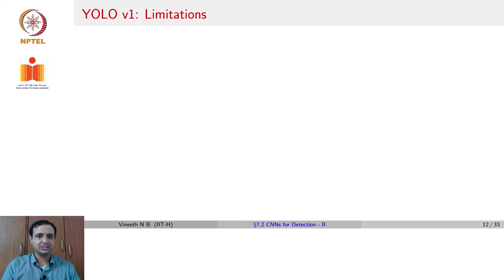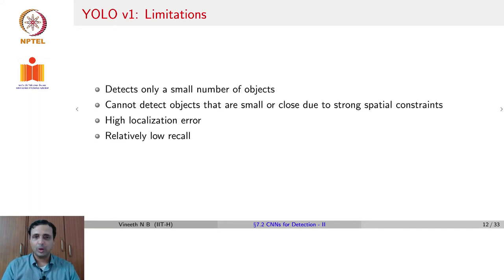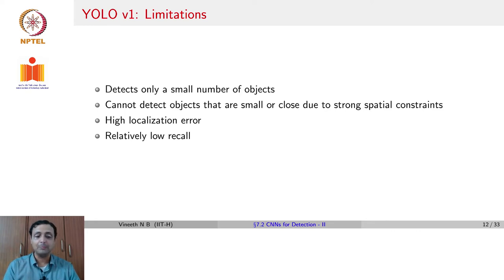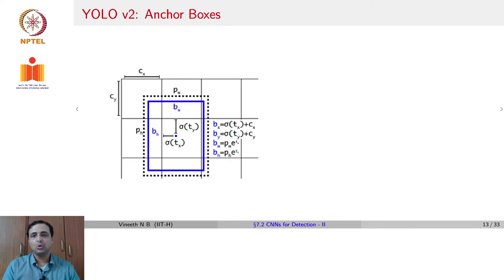YOLO V1 had a few limitations. Firstly, it detects only a small number of objects. It misses objects that are small or close to each other because of the spatial constraints of the methodology and how many overlapping objects can be represented. It ended up having a high localization error and relatively low recall. To overcome these issues, YOLO V2 was proposed as an extension of YOLO V1, which introduced the idea of anchor boxes into the YOLO framework. These anchor boxes are similar to what was seen with Faster R-CNN.